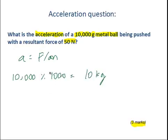So that's our mass. And we know our force is 50. So a equals 50 divided by 10, which equals 5 meters per second squared. And that's your answer.